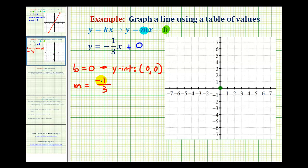Since the numerator is negative 1, that means the vertical change is down 1. And since the denominator is positive 3, that means the horizontal change is right 3. So from here, we'll go down 1 and right 3 to determine another point on this line.